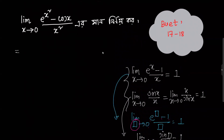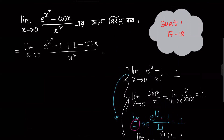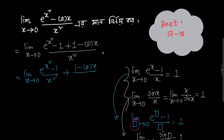Now I will apply this method to the next problem. X tends to 0 involves both the exponential function and the cosine function. If we have to apply the exponential function, we should apply the formula. The limit is x tends to 0 of e to the power x squared plus 1 minus cos x, all divided by x squared.